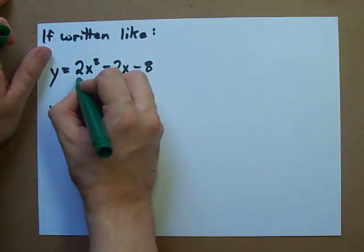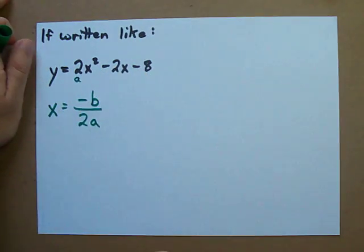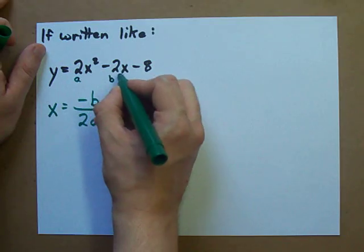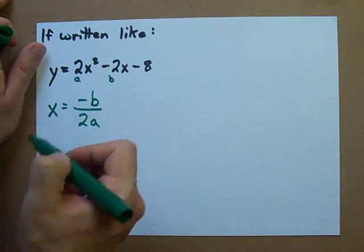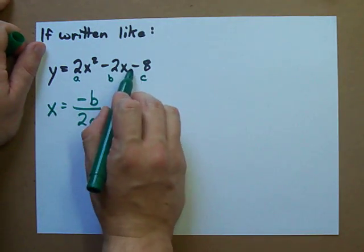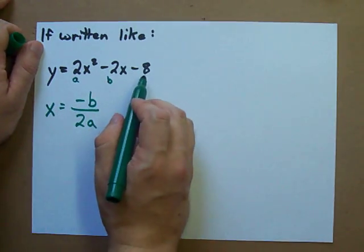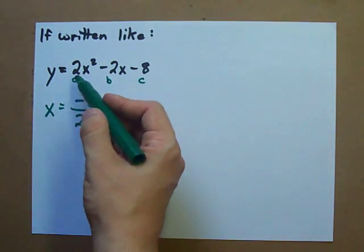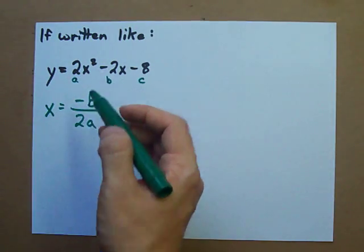If you want a refresher, the a is in front of the x squared. The b is in front of the x. In this case, it's negative 2. And, well, in quadratic formula, the number at the end is the c. Here, it's negative 8. So, a is 2. b is negative 2.